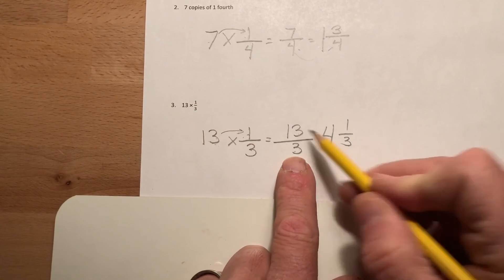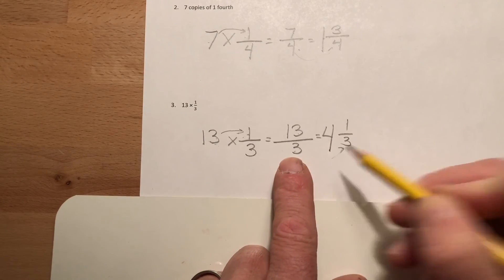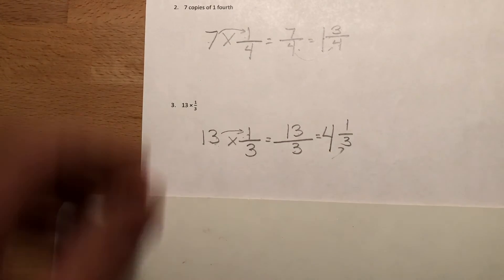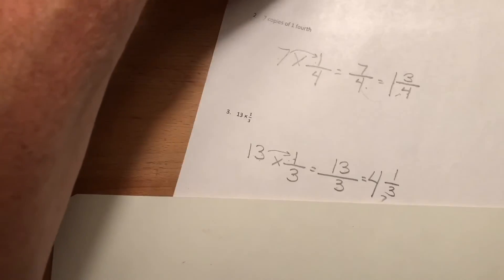So three fits into thirteen four full times with one left over and we have my three as our thirds as our denominator. Okay, there's that for you.